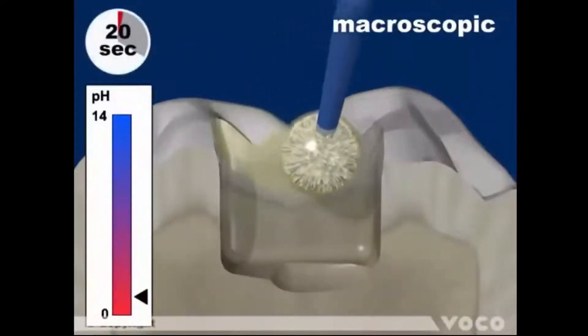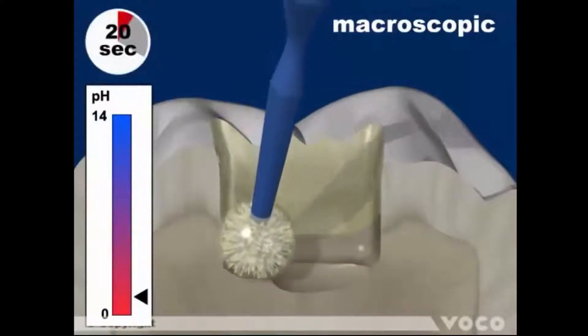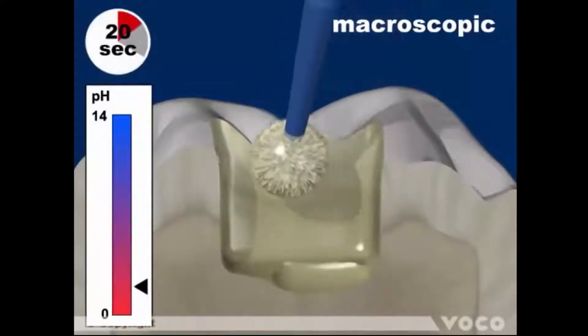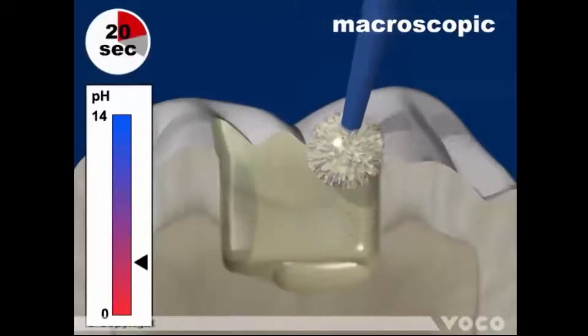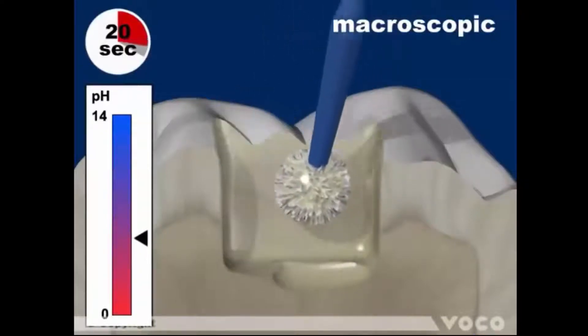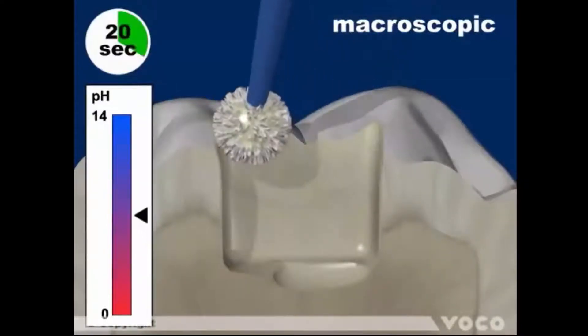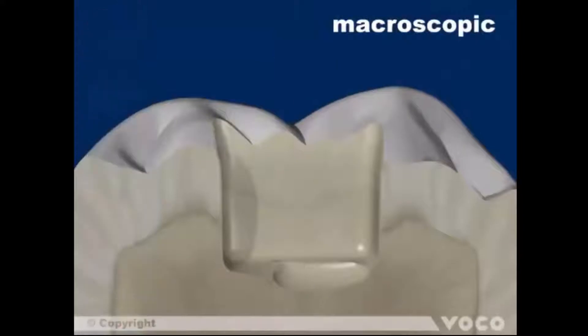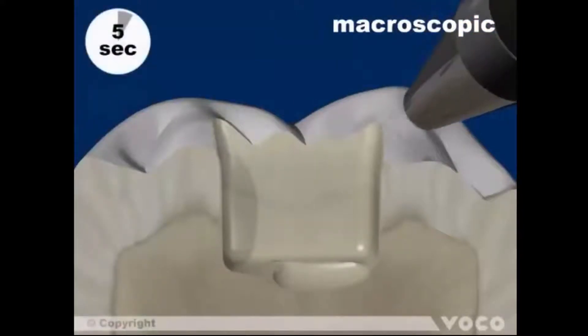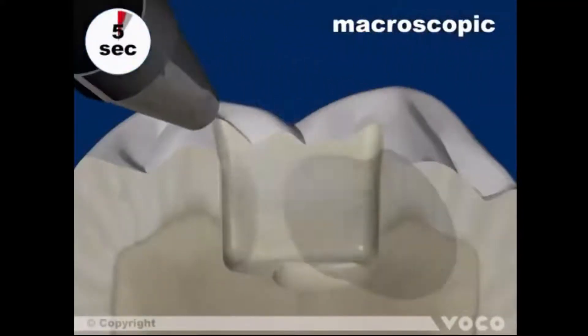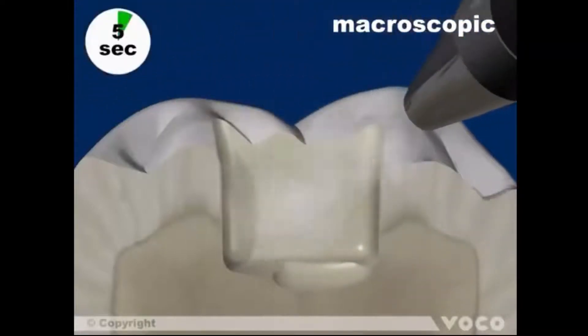Apply Ferturibon U completely, wetting the entire cavity for 20 seconds. The initial acidic pH value rises during this process to a neutral level. Gently air dry, which evaporates the solvents from the adhesive.